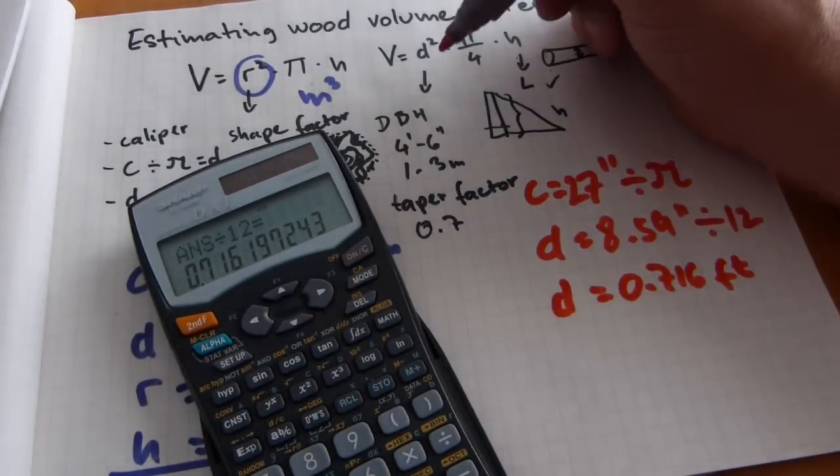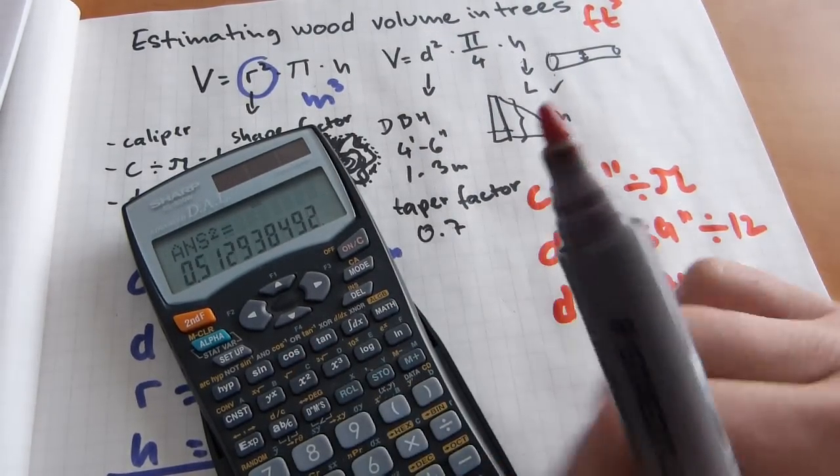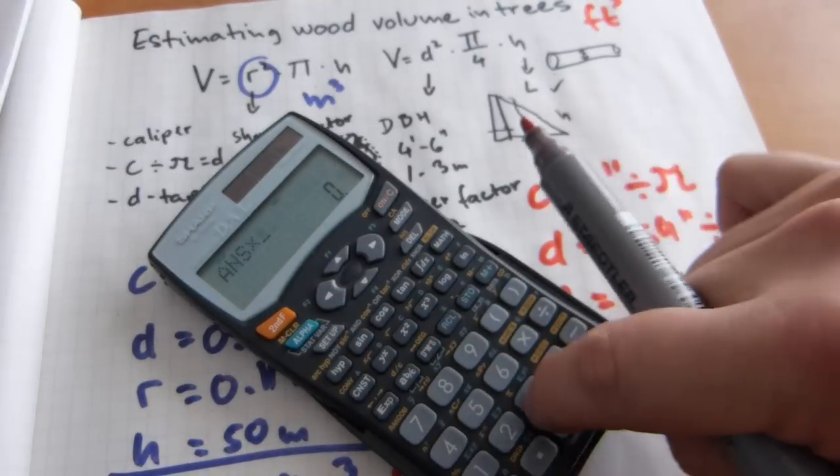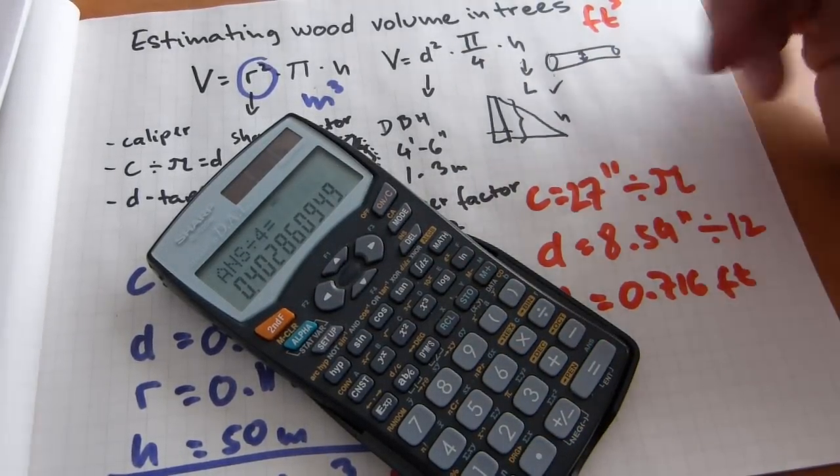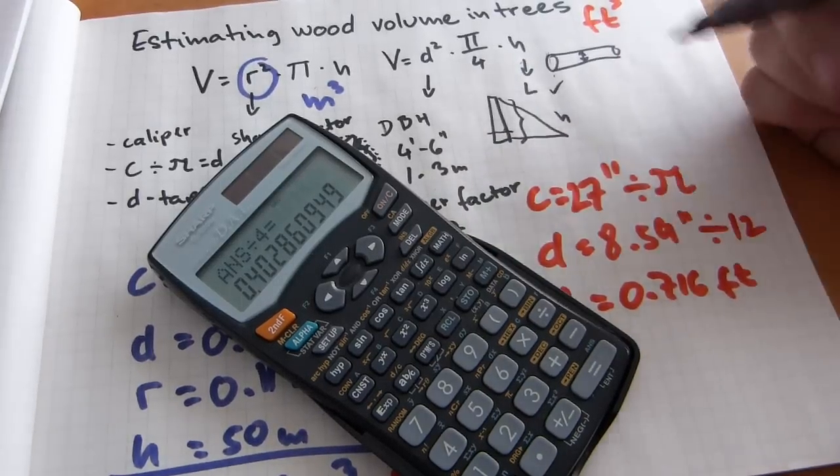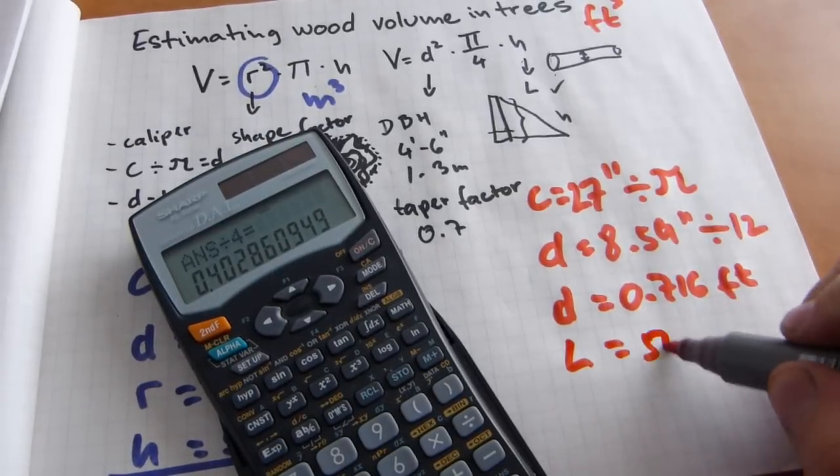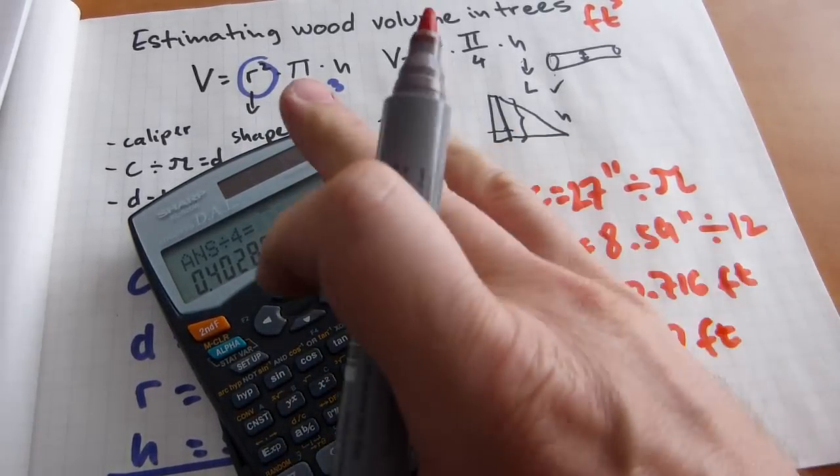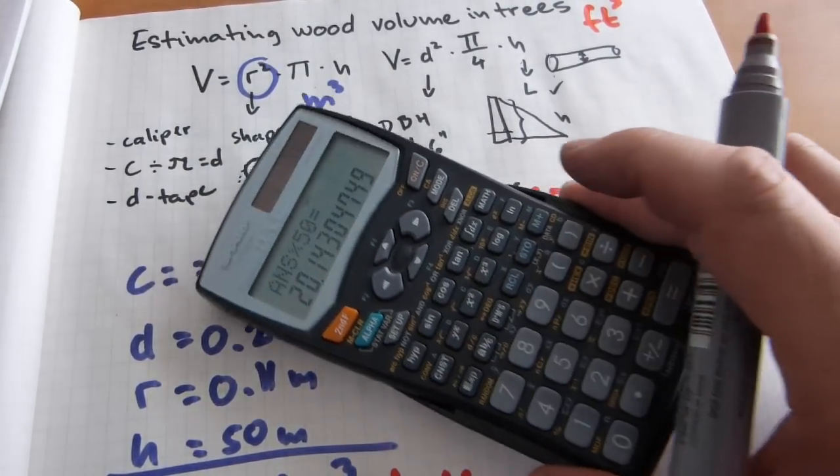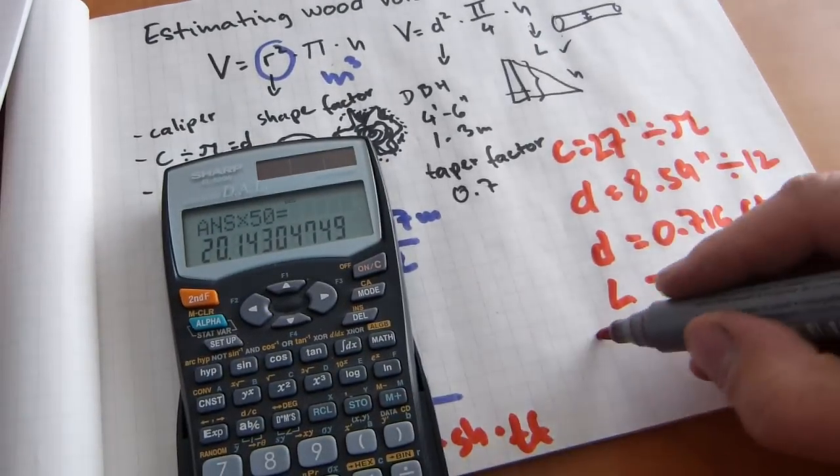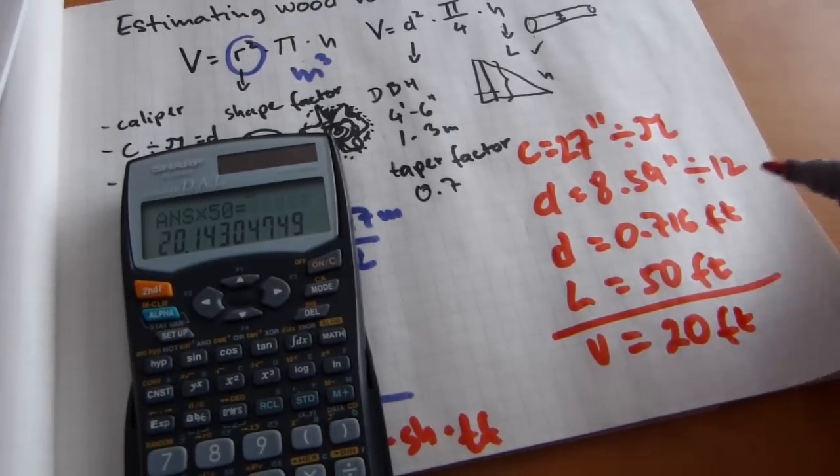Once we have it, I'm going to use this formula here, we're going to square it, like so. Equals that number, we're going to multiply it by pi again, and that number, divide by 4, that number, and multiply it with the length of the felled tree, how about 50 feet this time. So the length is 50 feet. So just times this by 50 equals 20 cubic feet. So the volume of this thing is 20 cubic feet.